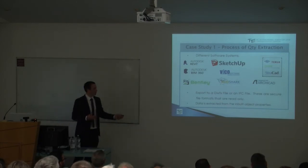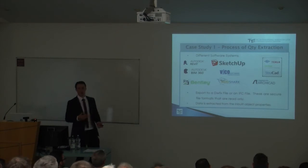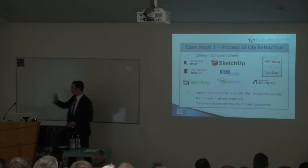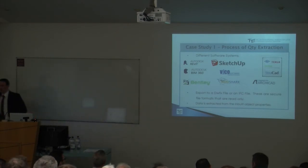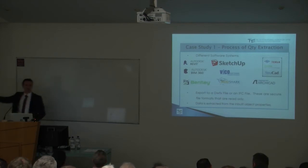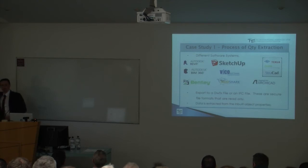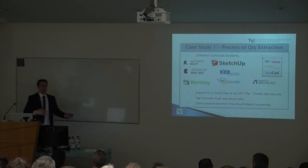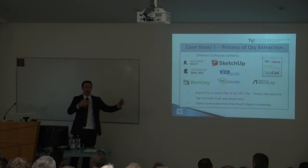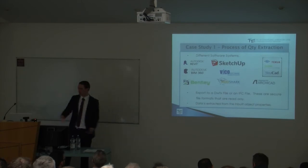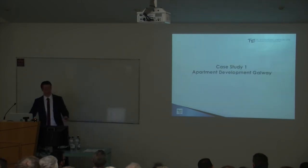So how it works — we extract the data. When somebody builds a model, they take a wall, and that wall, as was mentioned earlier, has object information in it. It'll say that's a wall, it's a blockwork wall, it's 350mm thick. That's the information in the model about that wall, and I can just extract that out.